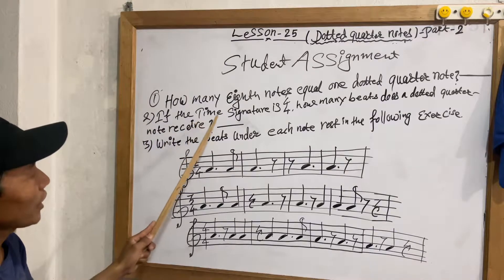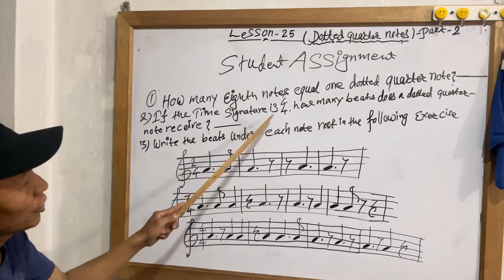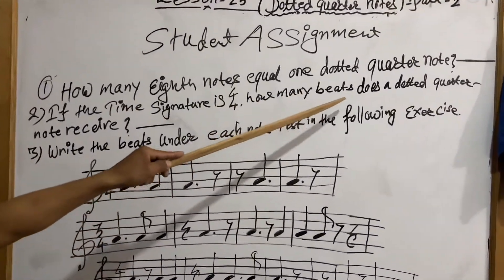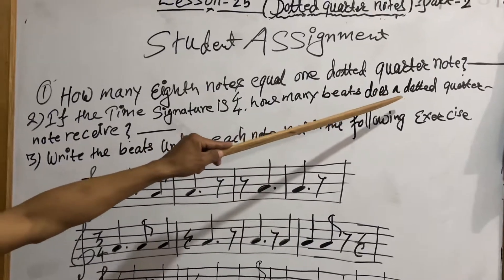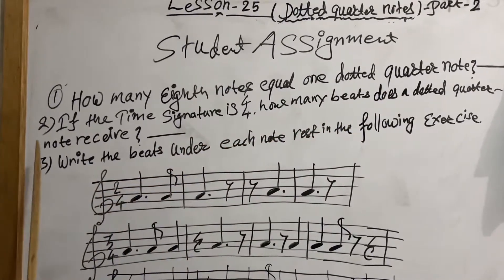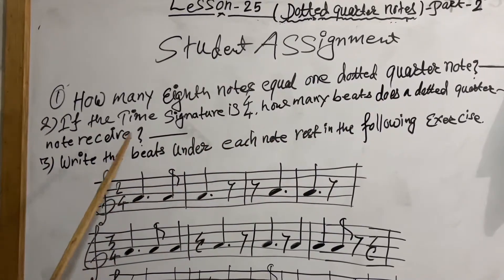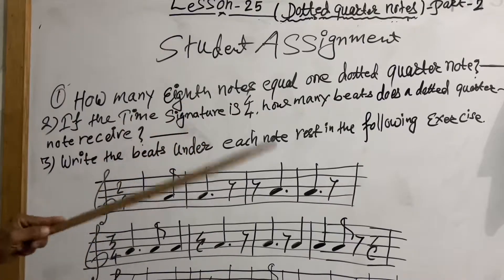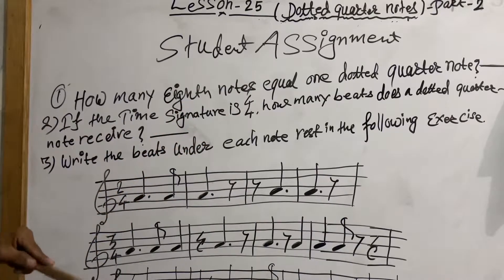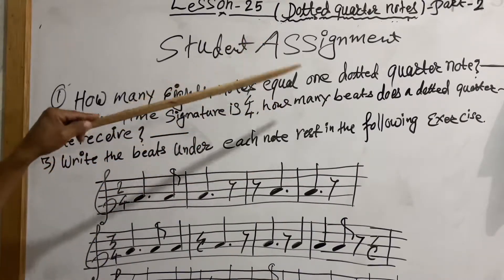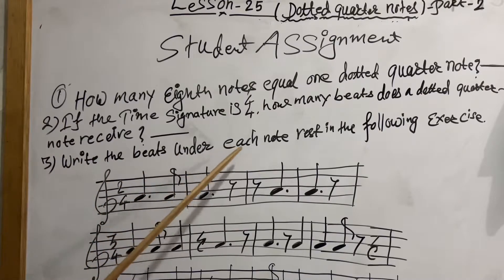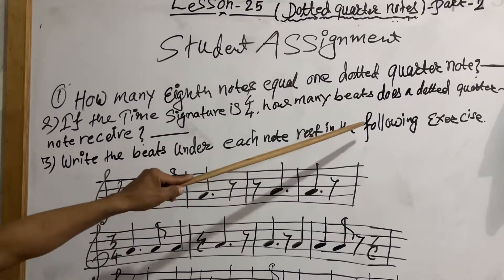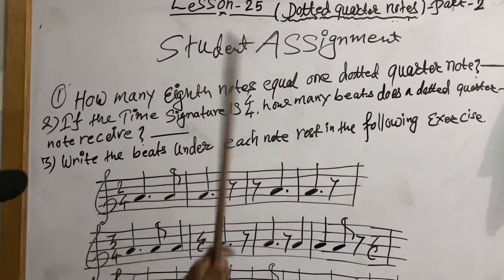In a 4/4 time signature, how many beats does a dotted quarter note get? This is part 1 of the student assignment. Write the beats under each note and rest in the following exercise.